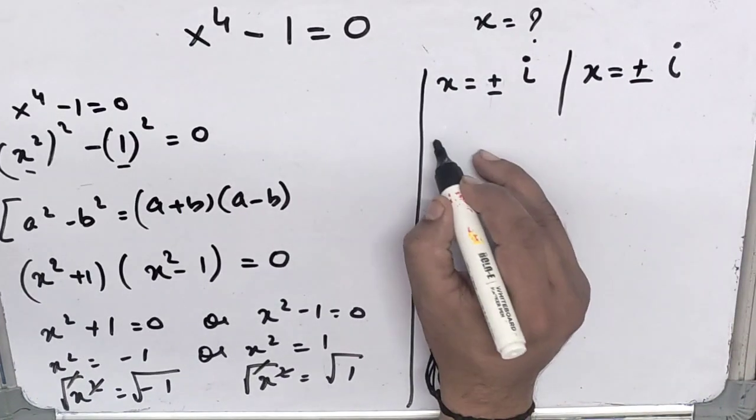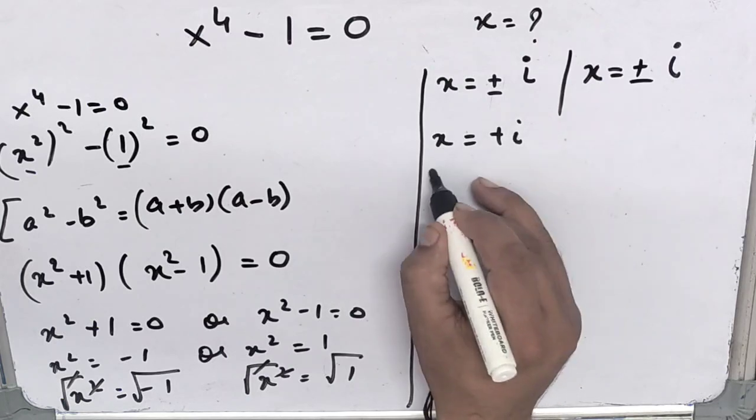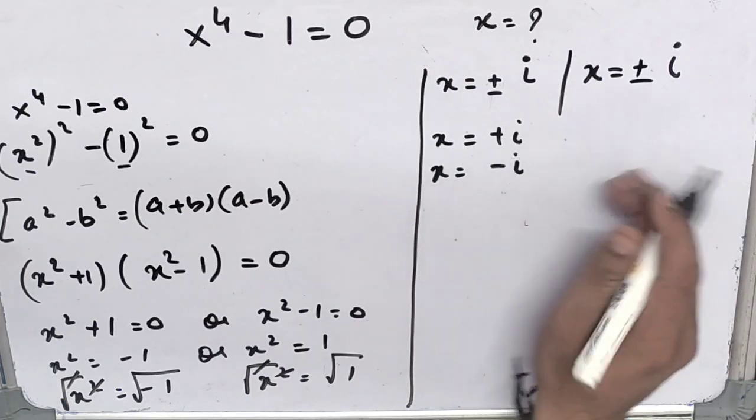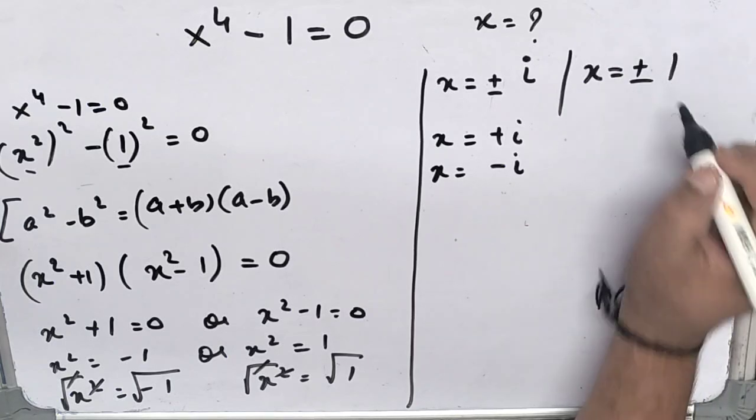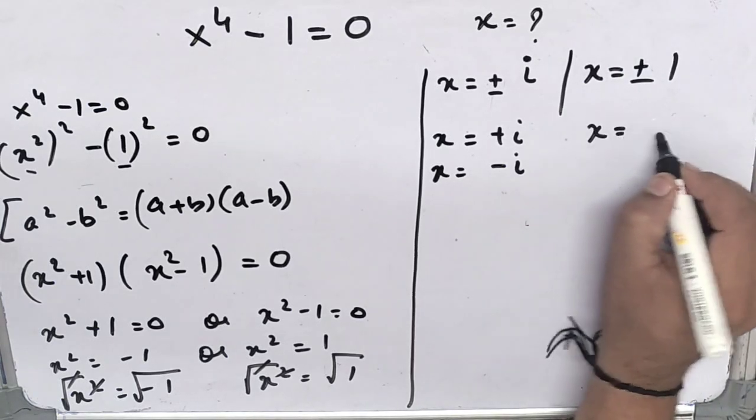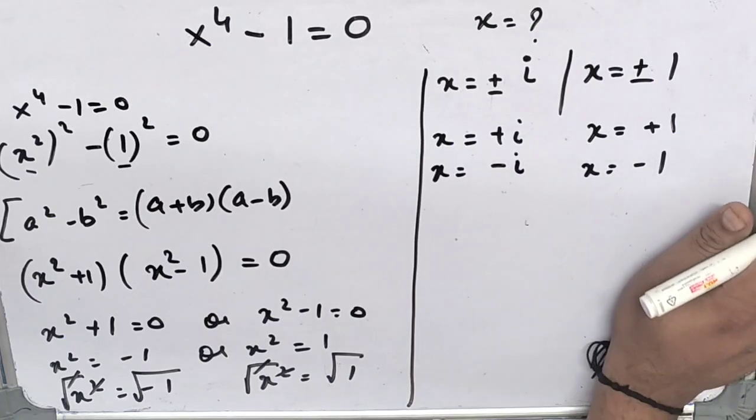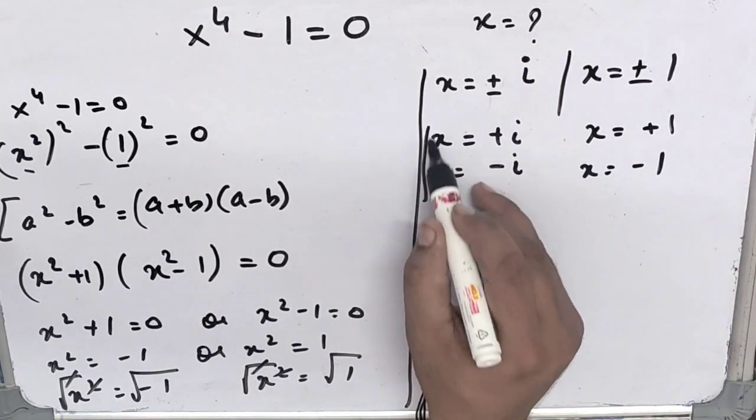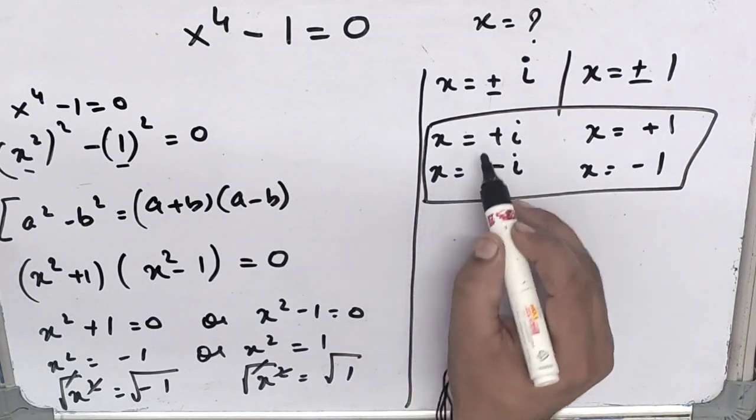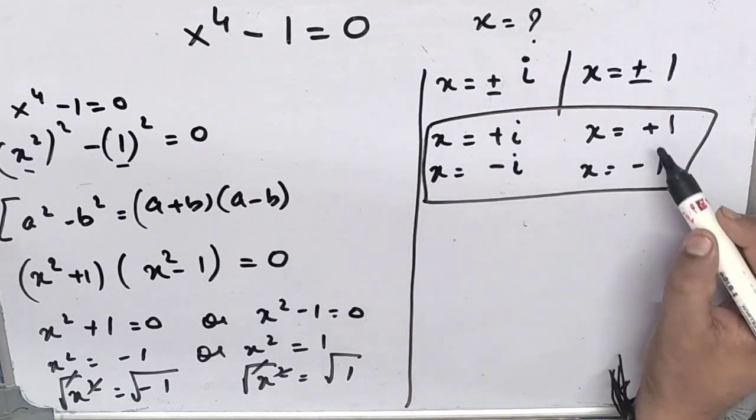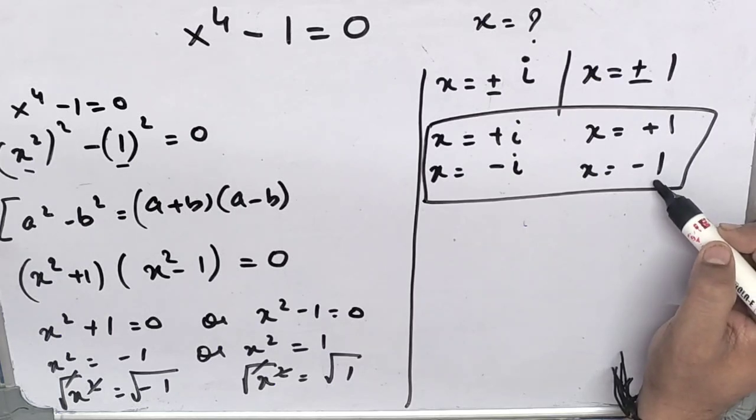So two values are x equals to plus i, x equals to minus i, x equals to plus 1, and x equals to minus 1. So the values of x we got as plus i, minus i, plus 1, and minus 1. Hope it's clear.